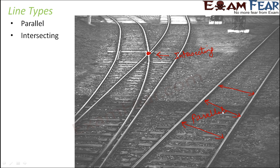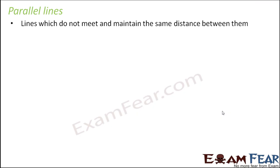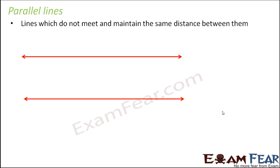So now we are going to talk about these two types of lines in more detail. Let's start with parallel lines. These are lines which do not meet and maintain the same distance between them. When you have two lines such that the distance between them remains the same, the lines will continue to extend infinitely and still the distance between the two lines will remain the same. That means these two lines will never meet — they will neither meet nor appear to meet. These lines are called parallel lines.